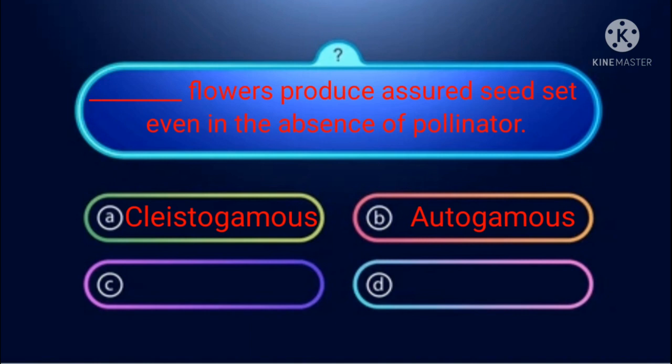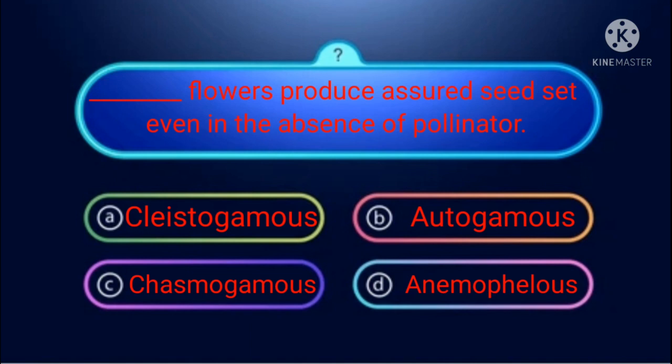Options are: cleistogamous — a closed flower where self-pollination occurs; chasmogamous — a bisexual flower where male and female reproductive systems are completely exposed; autogamous — a self-pollinating flower; and aphyllous flower — where pollination occurs by wind. The right answer is cleistogamous.